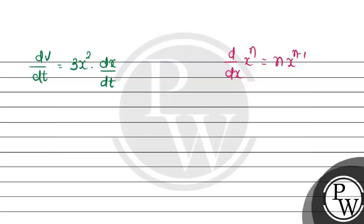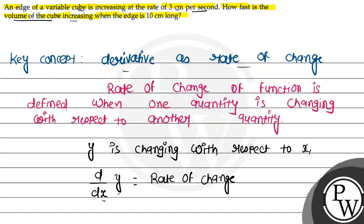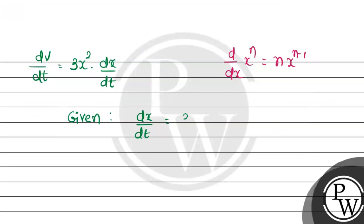We have the dx/dt value given, which is 3 cm per second. So dV/dt = 3x² × 3 = 9x².